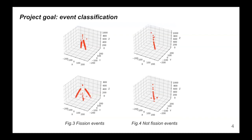What's the difficulty? Firstly, we have unlabeled data. Secondly, the percentage of fission events is very small — about 3% fission and 97% non-fission. The question is: how to solve this problem?